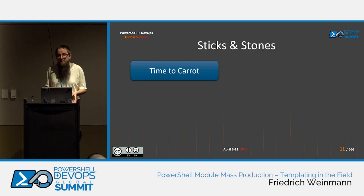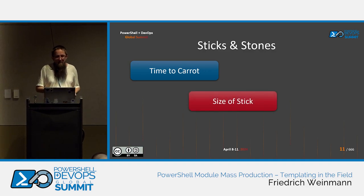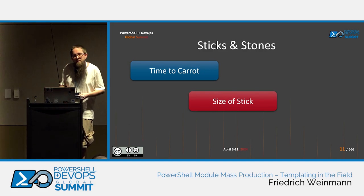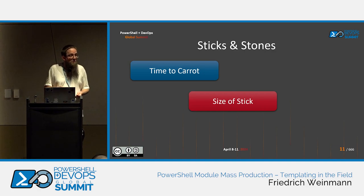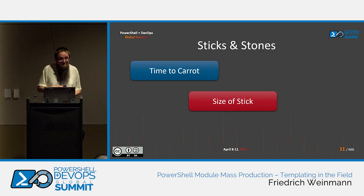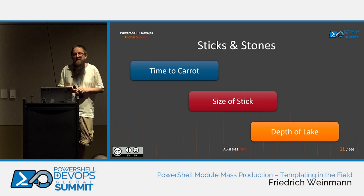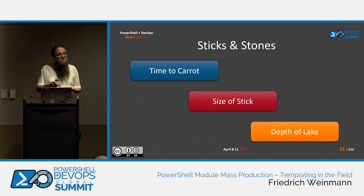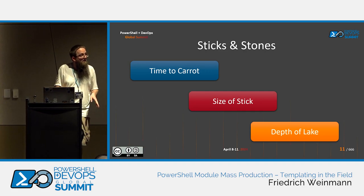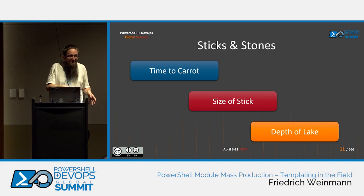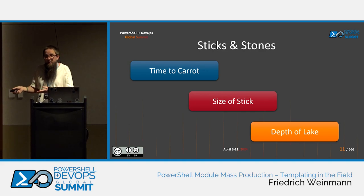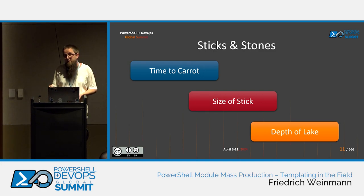Show of hands: who has ever looked into Just Enough Administration, and who has persisted until deployment? About what I expected. The time-to-carrot rate for JEA is horrible — we need to deploy the full solution around it. Desired State Configuration has a similar problem. So having a templating engine that allows us to get going in the first five minutes is handy. On the other hand, usually the easier it is to get started the less powerful it tends to be. The stick size matters — how much pain do I have to go through before I can do something? And finally: the depth behind the solution — how extensible and flexible is it, and what is my potential after I've gotten started?